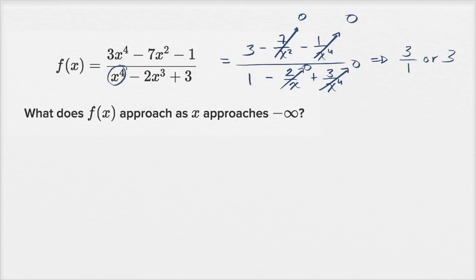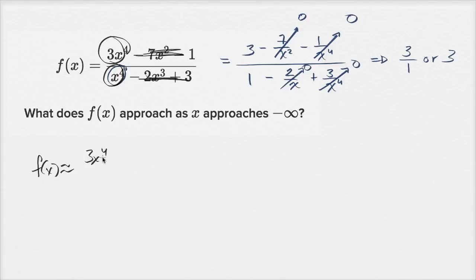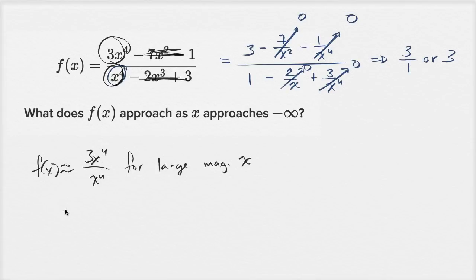Another way to think about it: look at the highest degree terms — three x to the fourth on top and x to the fourth on the bottom — and ignore everything else, since those lower-degree terms get overwhelmed. So f of x is approximately equal to three x to the fourth over x to the fourth for large magnitude x. Very negative x still has large magnitude, so f of x approaches three.